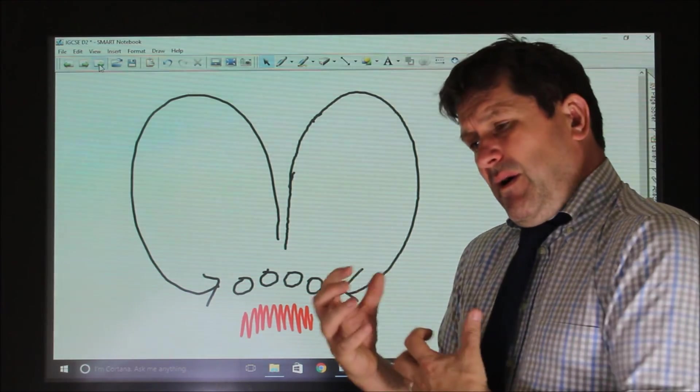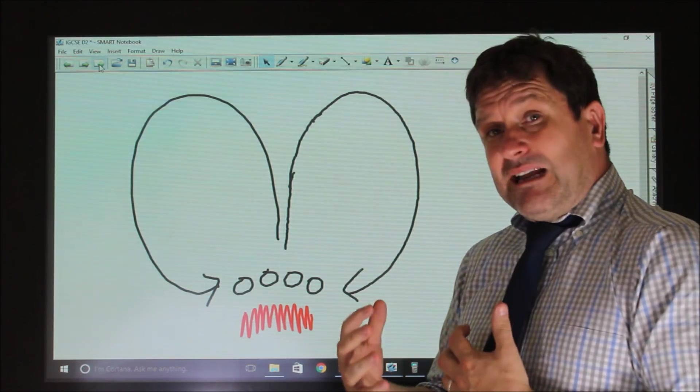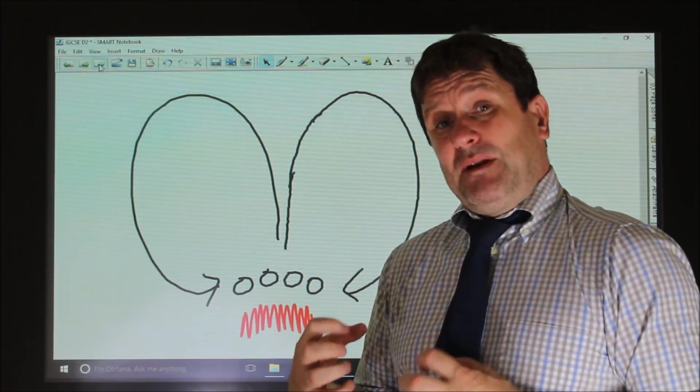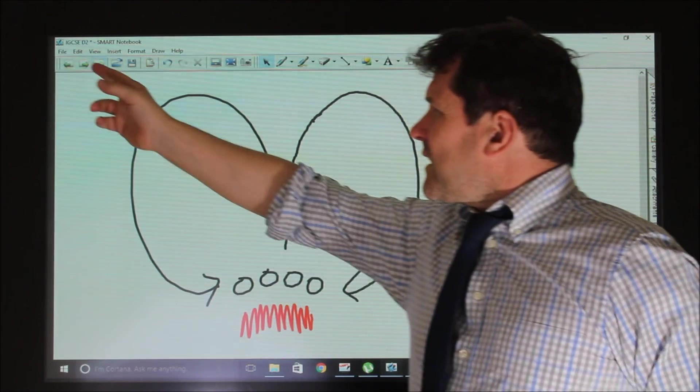In conduction, the particles are fixed. They're not able to move. If heat passes through them, it's happening without the particles themselves moving.